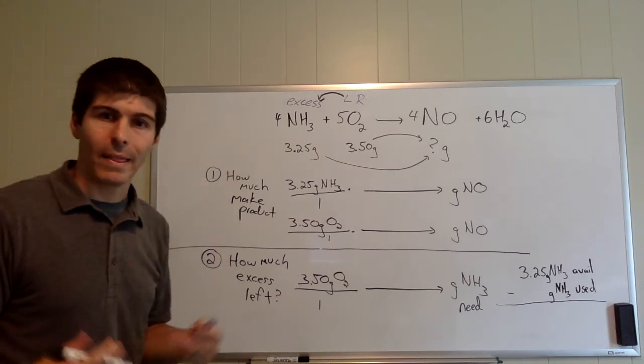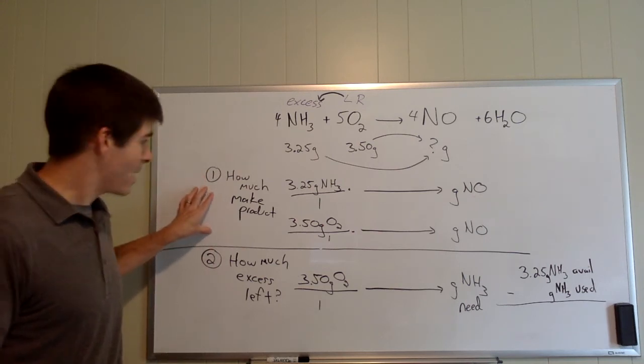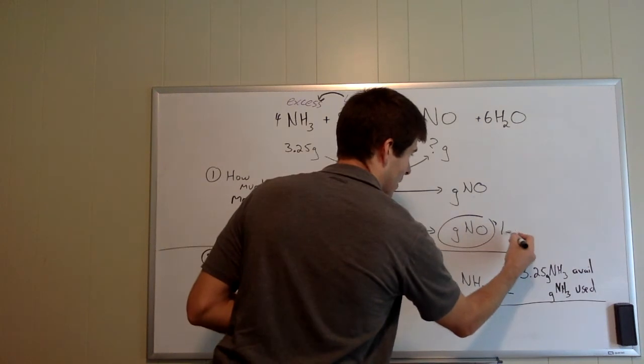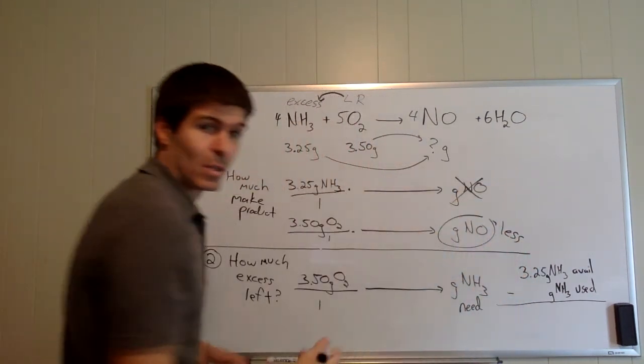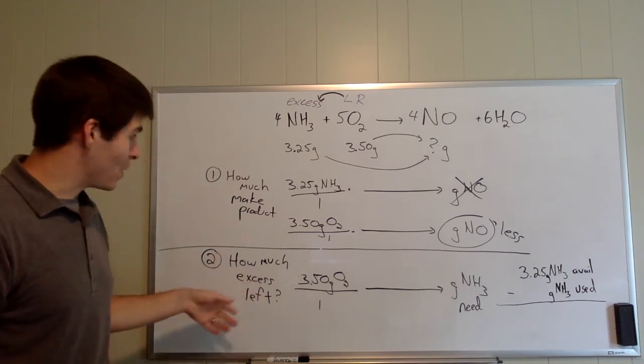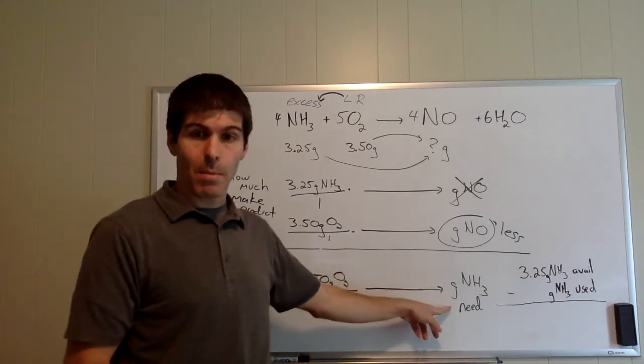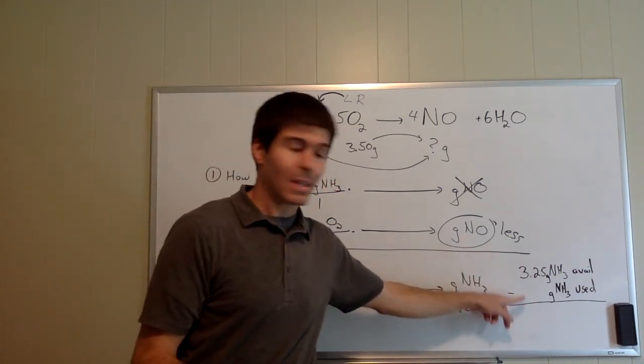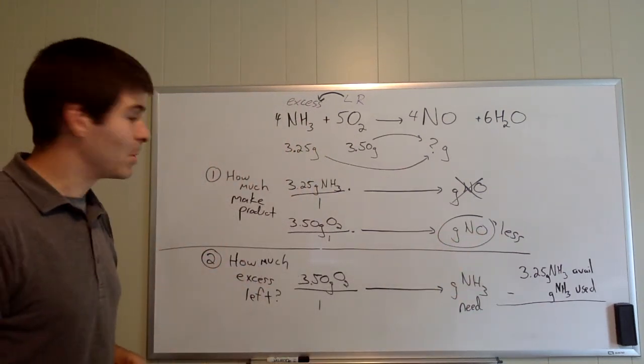So hopefully this gives you a framework for working through a limiting reactant problem. How much product can we make? The oxygen is going to end up making less. So we can make this much. This other answer is now meaningless. But then to figure out how much ammonia is actually left over, we would have to convert the oxygen over to the ammonia. Subtract how much we need from what we started with to see how much is actually left over. So that's how a limiting reactant problem looks.